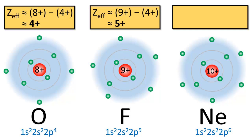And finally, for neon, the charge of the nucleus is 10+, and the 4 core electrons take away 4+ due to shielding, resulting in an effective nuclear charge of 6+.